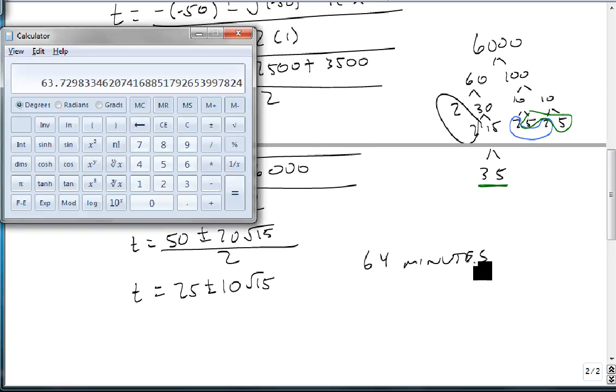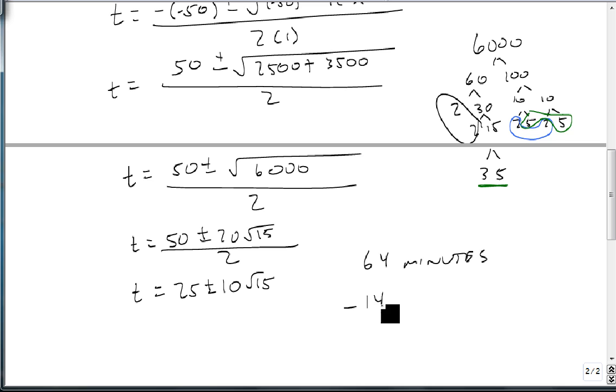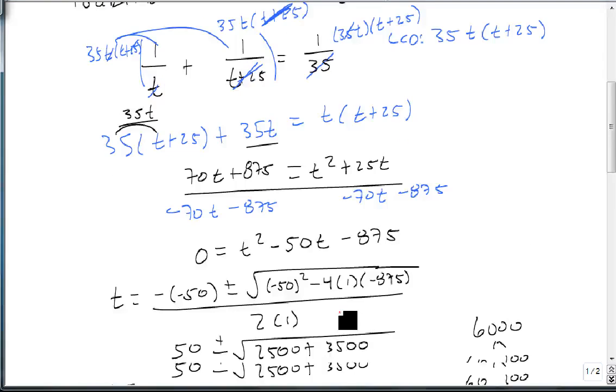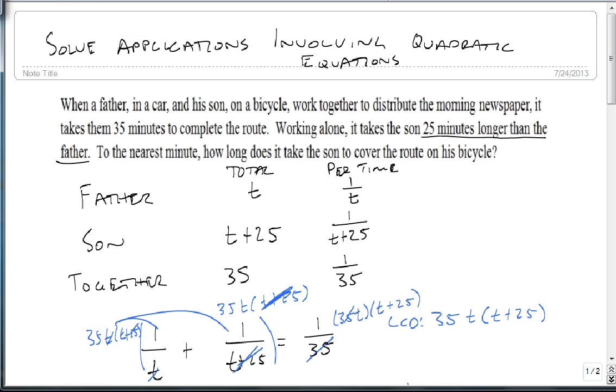And the other one, 25 minus 10 times the square root of 15, is minus 14 minutes. Since we can't have negative time, we can rule out the minus 14 minutes, which means the father, t, does the job in 64 minutes.